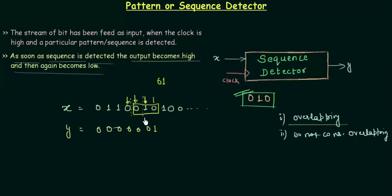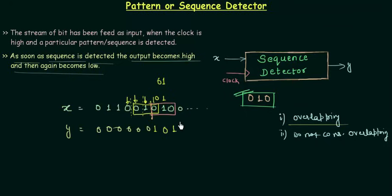Let's continue to the next bit — it is 1, so output is 0. But again I have considered the previous 0, so I have 0, 1, and then the last bit of our pattern is also 0, and here I have 0 — so output is 1 again. The pattern appears twice in this bit stream and I find it through overlapping. This 0 has been overlapped, this 0 has been overlapped, to get the pattern.